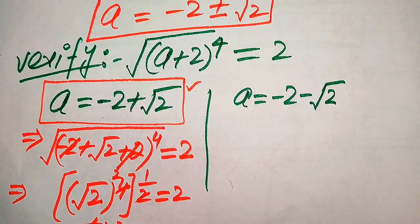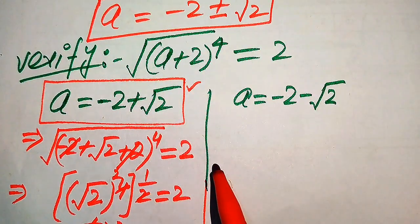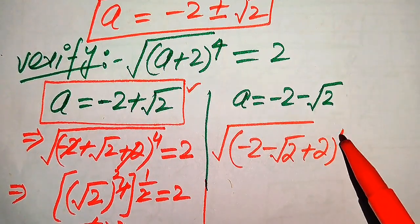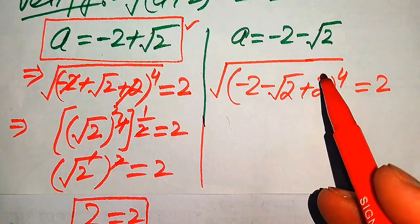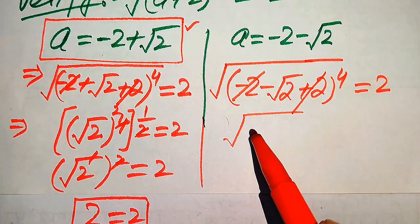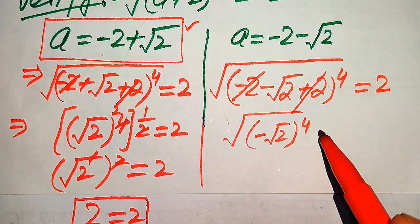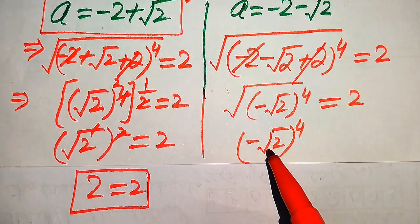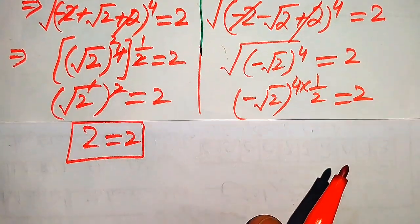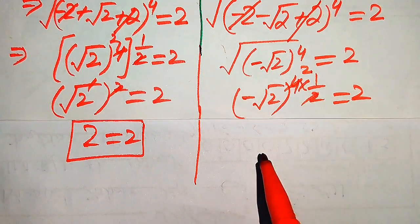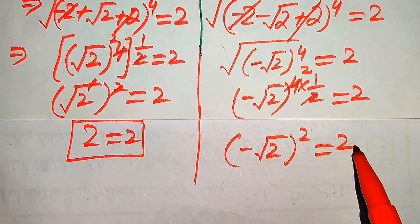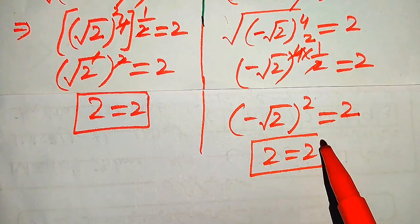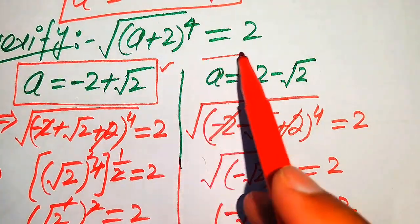Now we verify the second root, a = −2 − √2. Substituting: √((−2 − √2 + 2)⁴) = √((−√2)⁴) = ((−√2)⁴)^(1/2) = (−√2)². Since the square of a negative is positive, (−√2)² = 2, giving 2 = 2. The second value of a also satisfies the equation, so both roots are valid solutions.